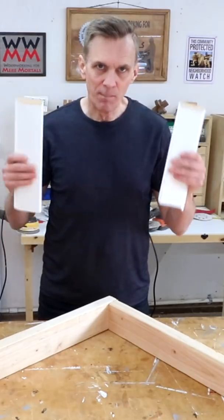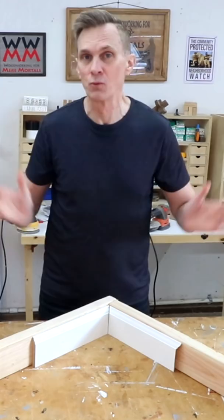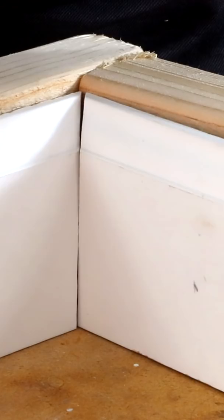Installing baseboards on the inside corners of walls can be tricky because walls are rarely at 90 degree angles. If you just make a straight 45 degree miter, chances are you'll end up with something like this.